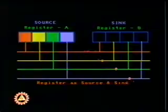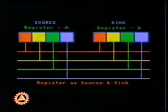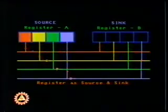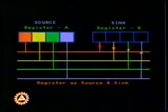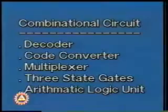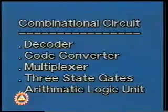The communication between registers takes place through parallel paths known as a bus. We shall now briefly review some combinational circuits, namely decoder, code converter, multiplexer, three-state gates, and the arithmetic logic unit. Let's discuss these one by one.